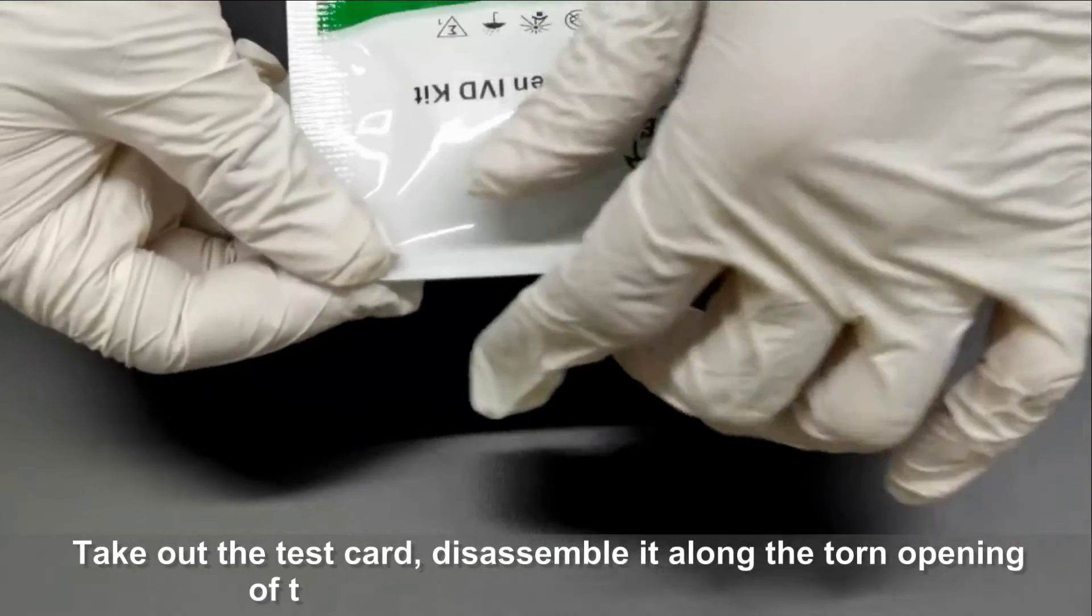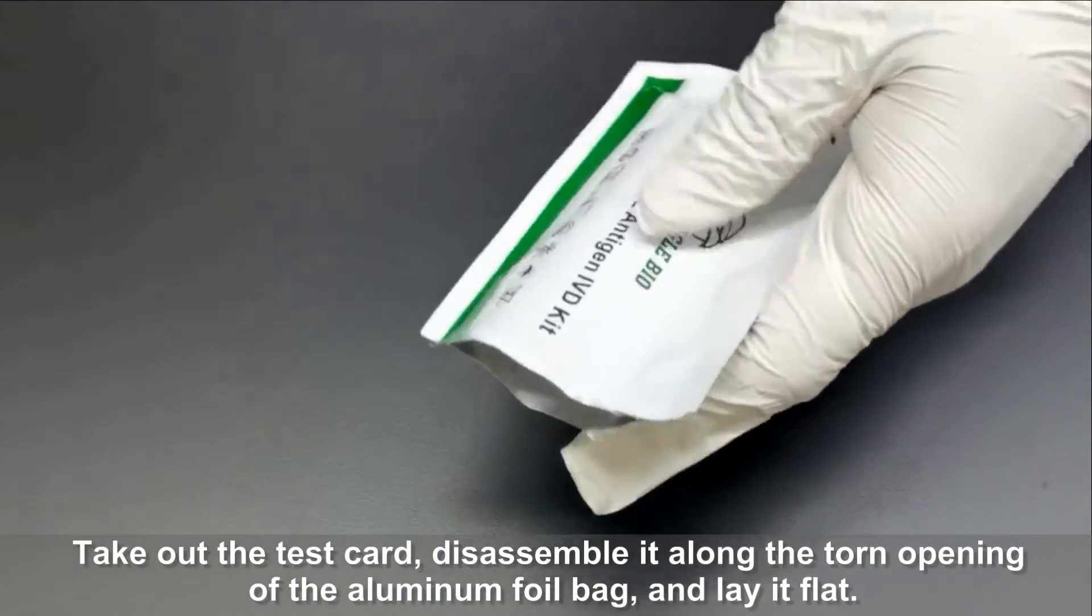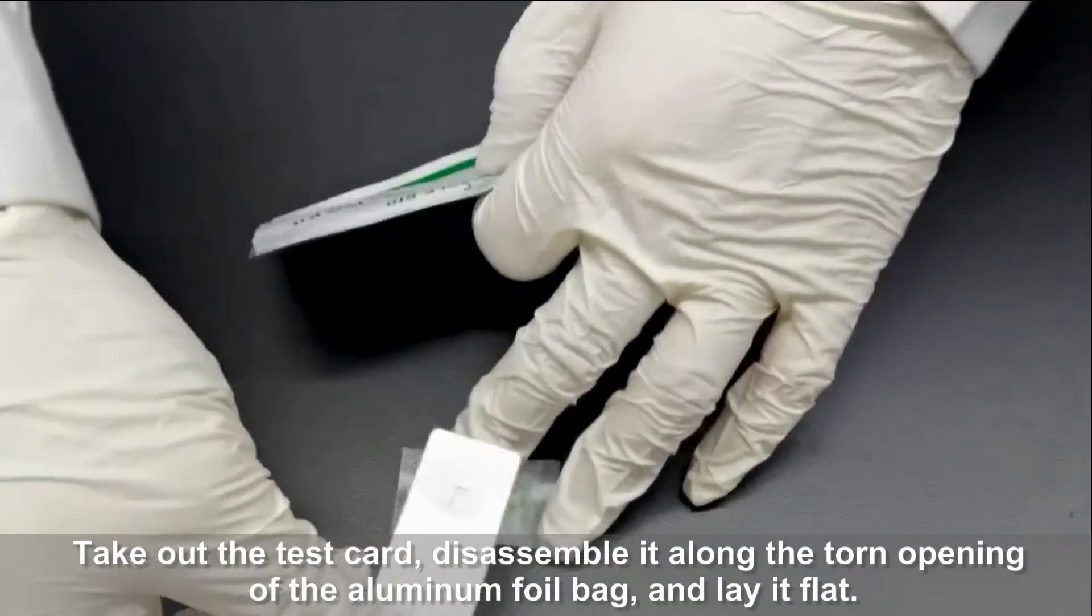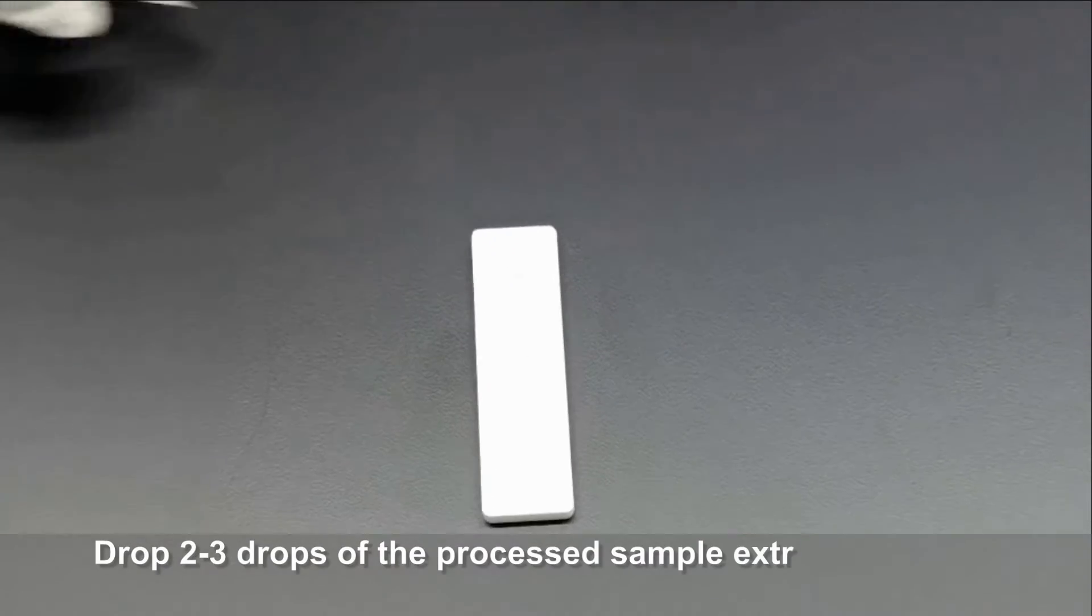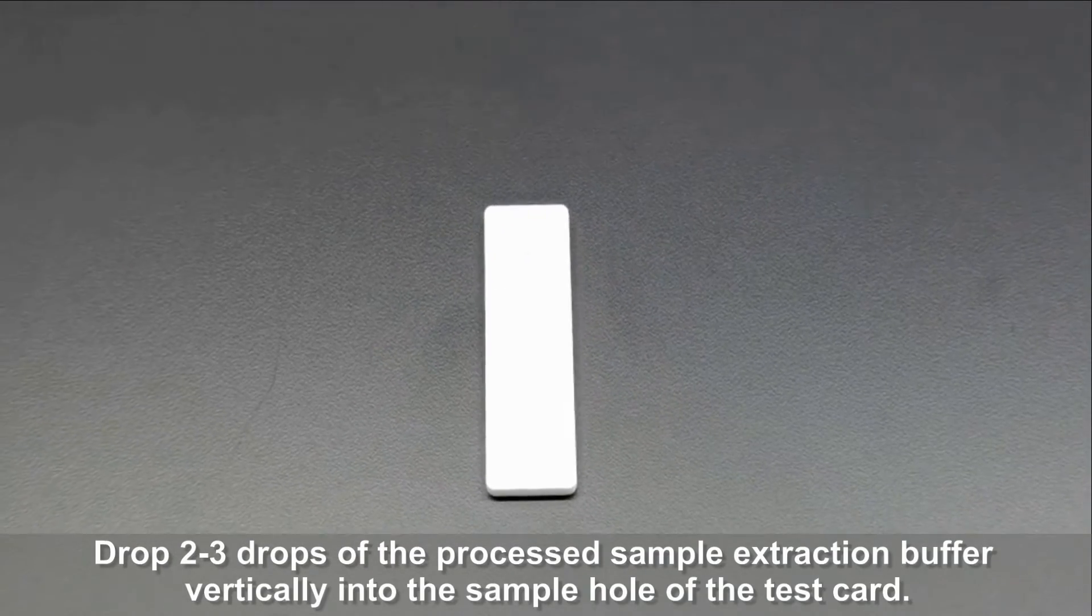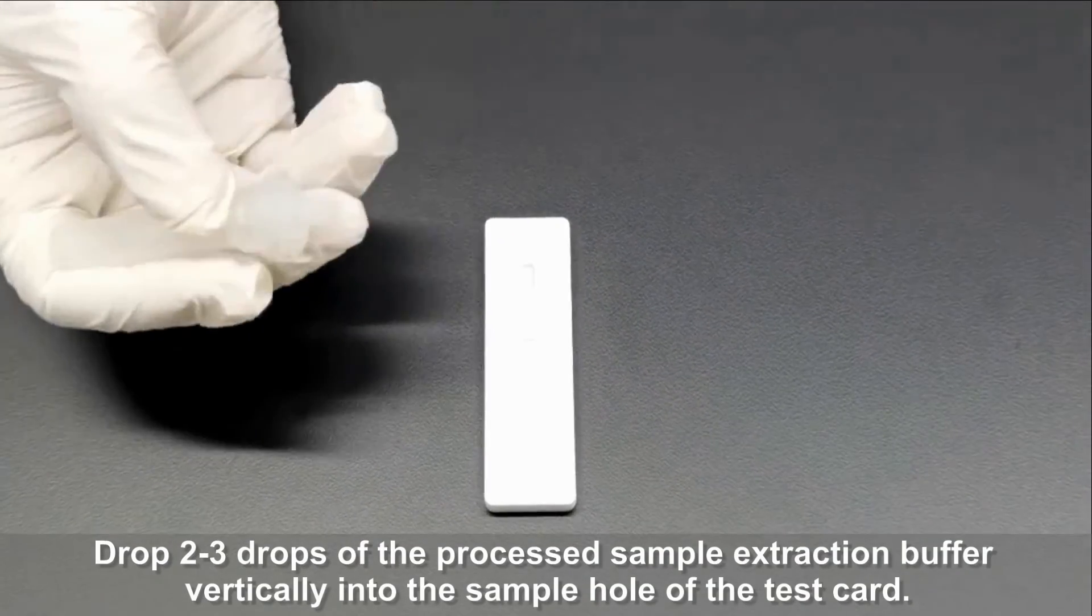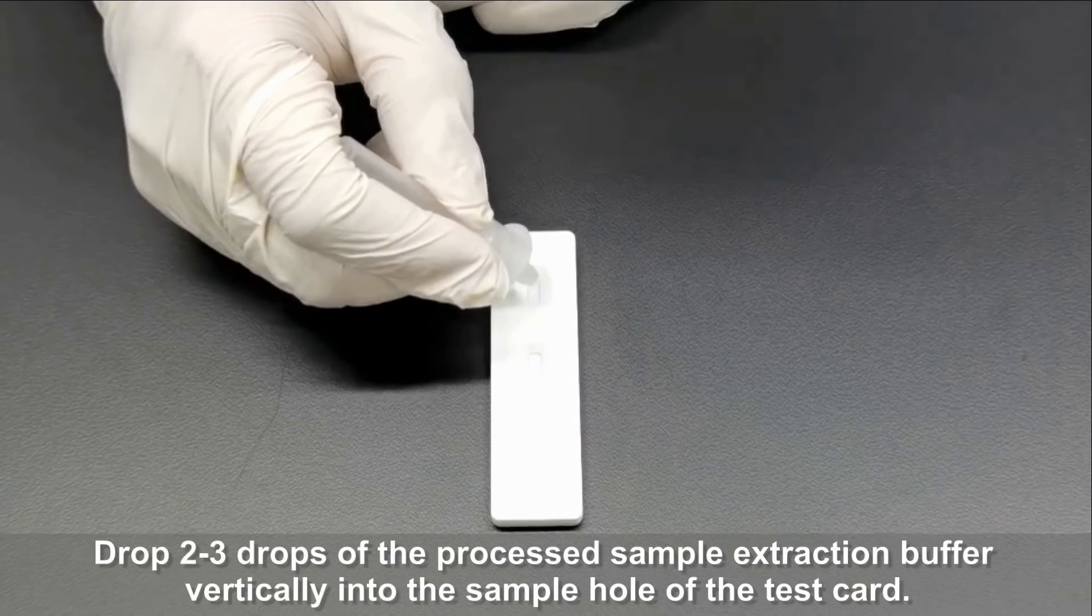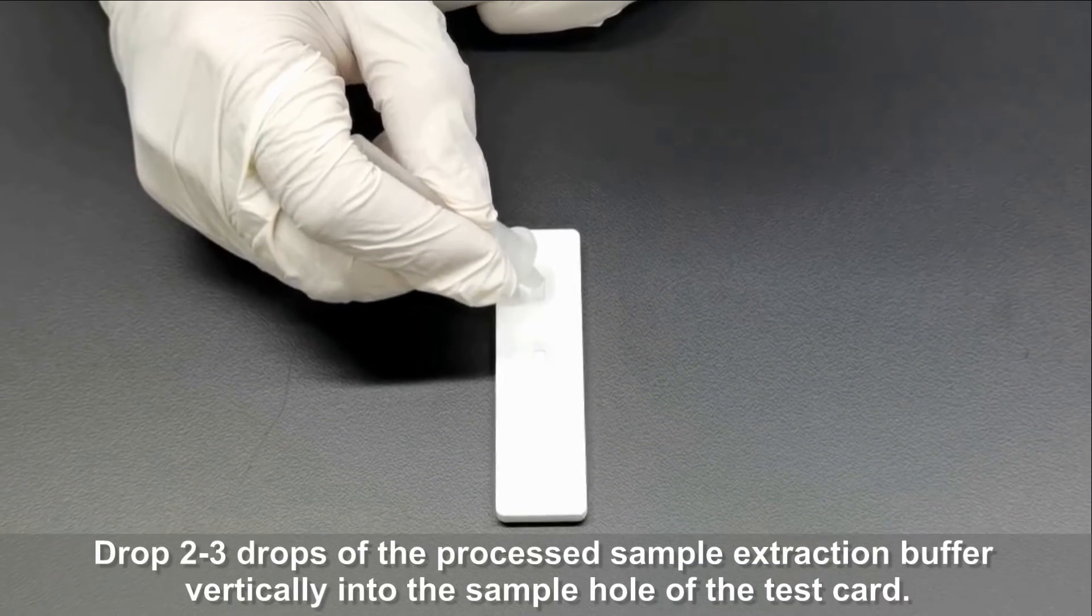Take out the test card. Disassemble it along the torn opening of the aluminum foil bag and lay it flat. Drop 2 to 3 drops of the processed sample extraction buffer vertically into the sample hole of the test card.